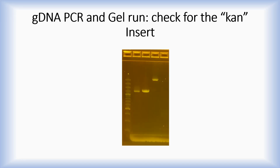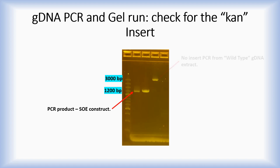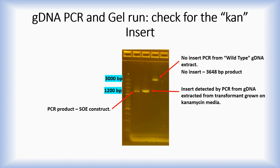Run the PCR products on a 2% agarose gel. The key 100 base pair marker sizes are highlighted in blue. Here the PCR construct is shown, and it is of the expected size. Here is the PCR product amplified from genomic DNA of cells that have not undergone transformation. Here is the PCR product from the genomic DNA of cells that have undergone transformation — the PCR product is the same size as the construct, indicating the construct has been transformed into the genome of the species being investigated.